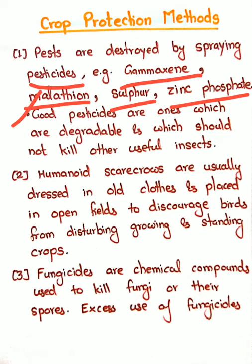Good pesticides are ones which are degradable and should not kill other useful insects. There are two main characteristics. First, they should be degradable — meaning they should break down biologically and not pollute the environment. Second, they should not kill useful organisms. For example, earthworms are friends of farmers and should not be destroyed by pesticides.